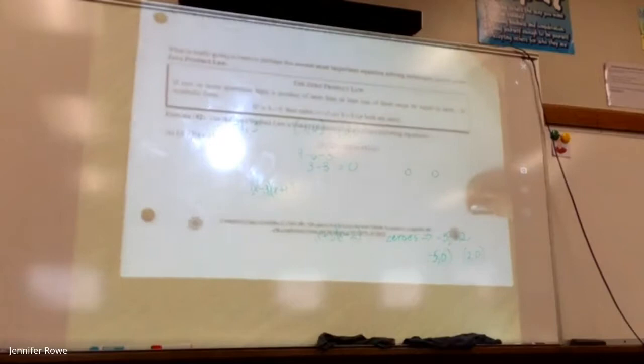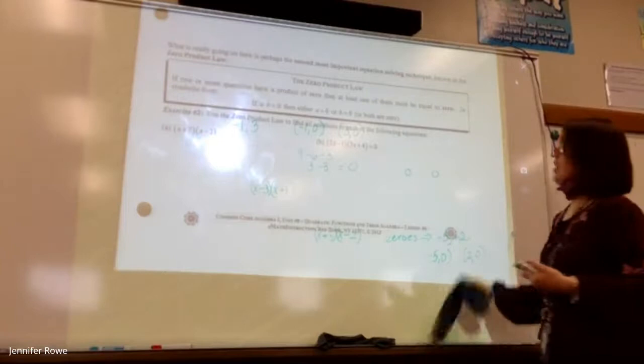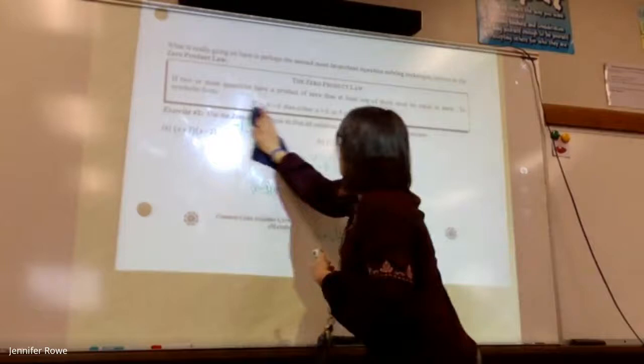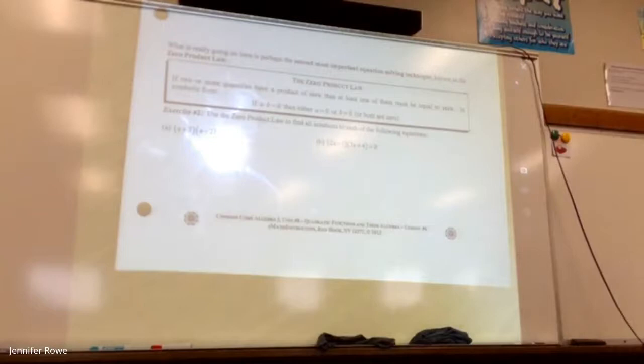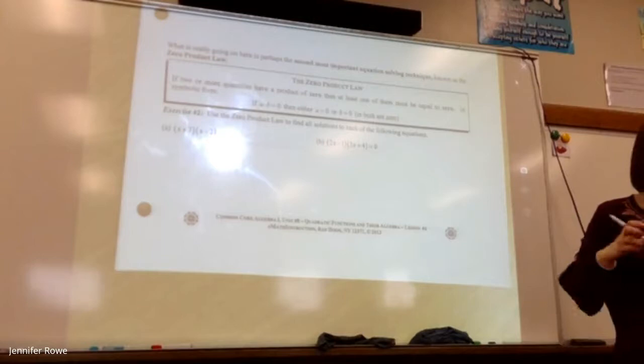What is really going on here is perhaps the second most important equation solving technique known as the zero product law. We talked about this at the beginning of the year, we just don't give it that fancy name. We call it multiplication property of zero. The zero product law says if two or more quantities have a product of zero, then at least one of those two things has to be zero. That's all they're saying to you. This is how easy this is now that we know unfoil.